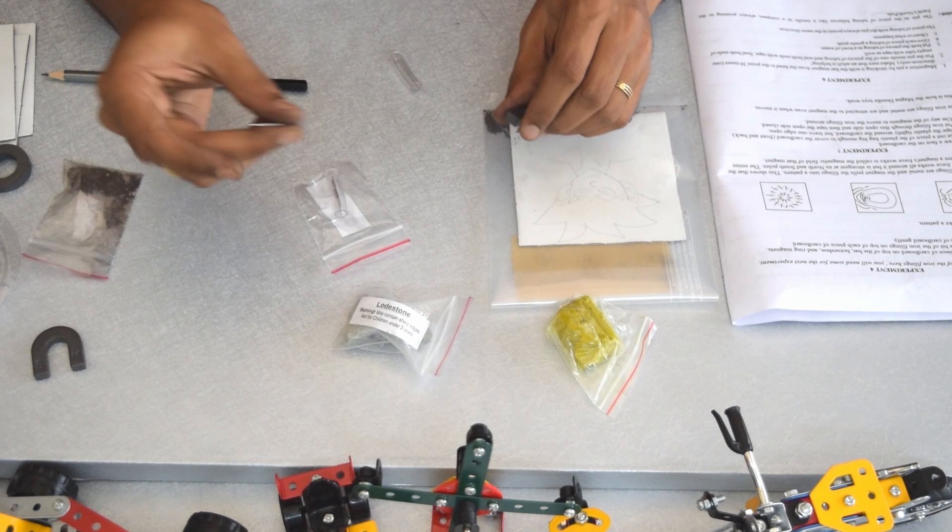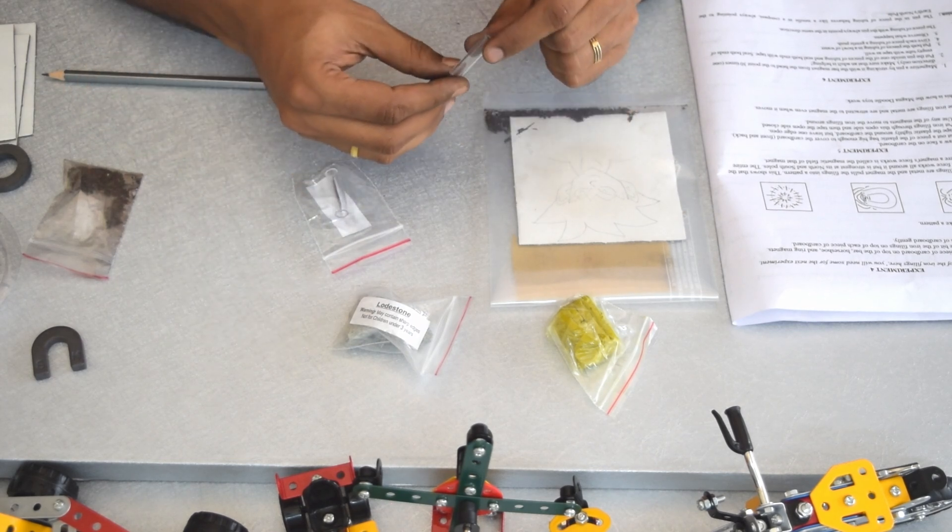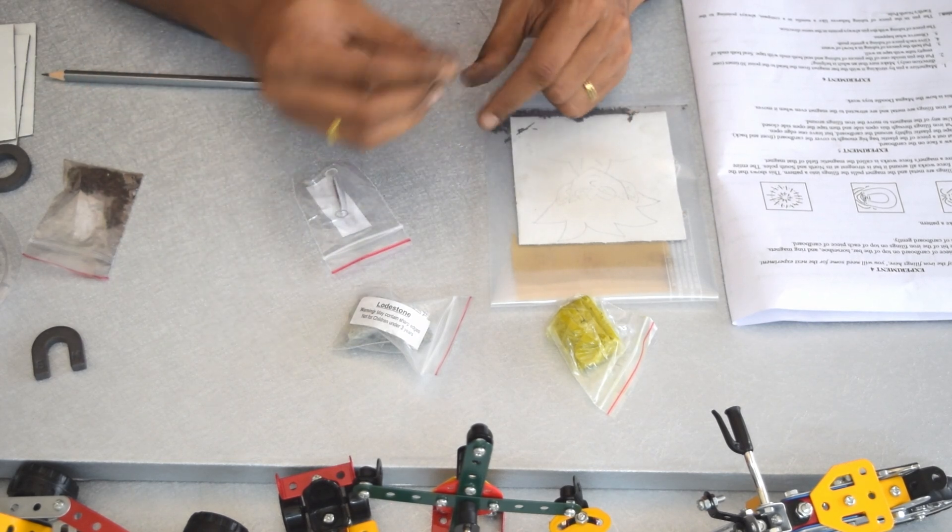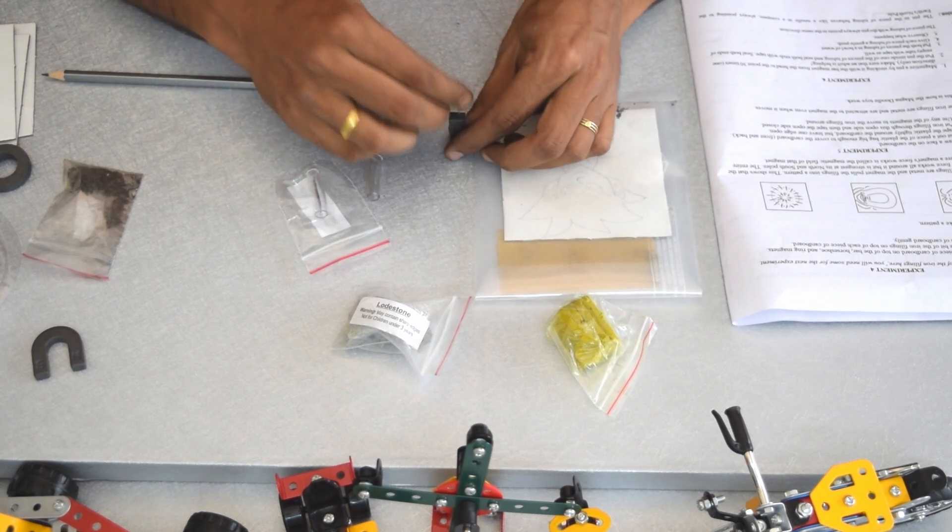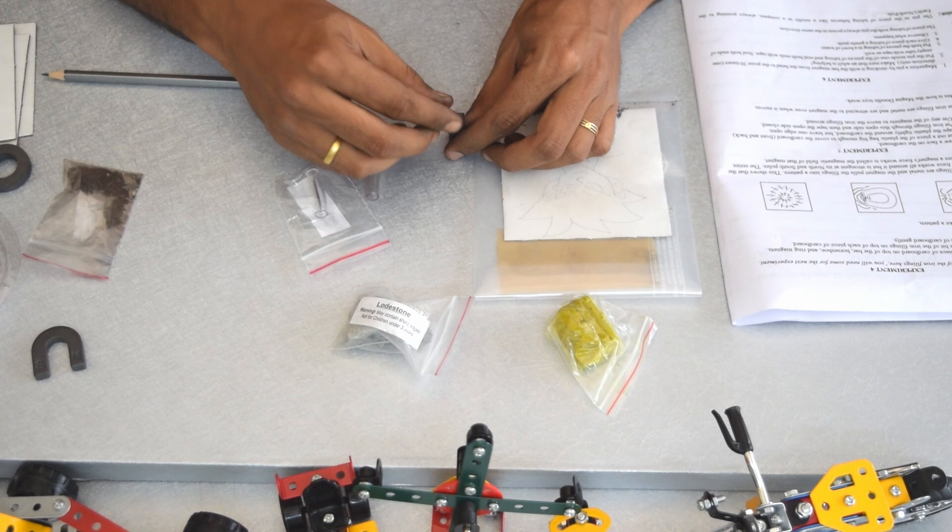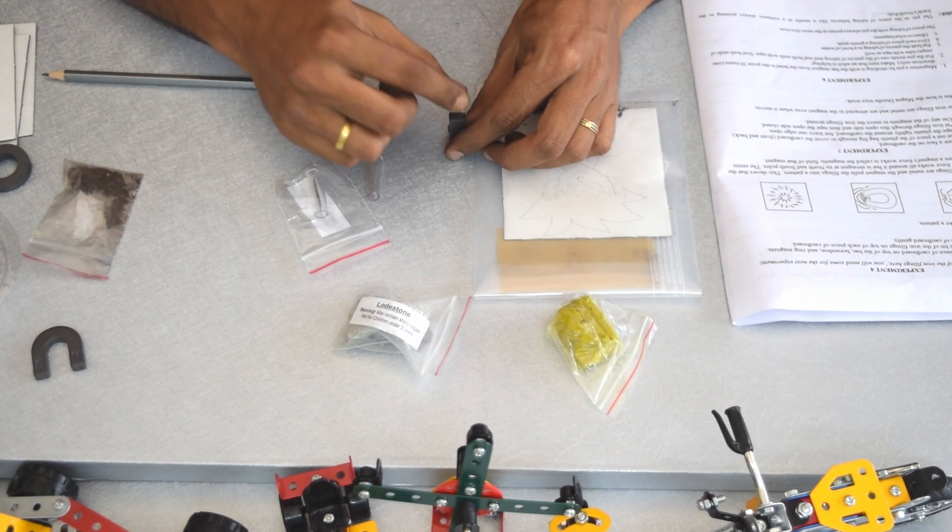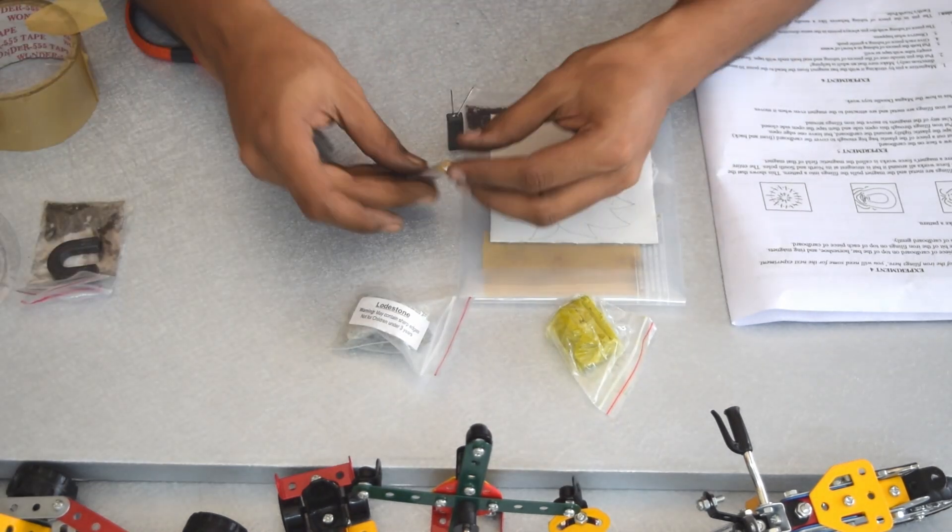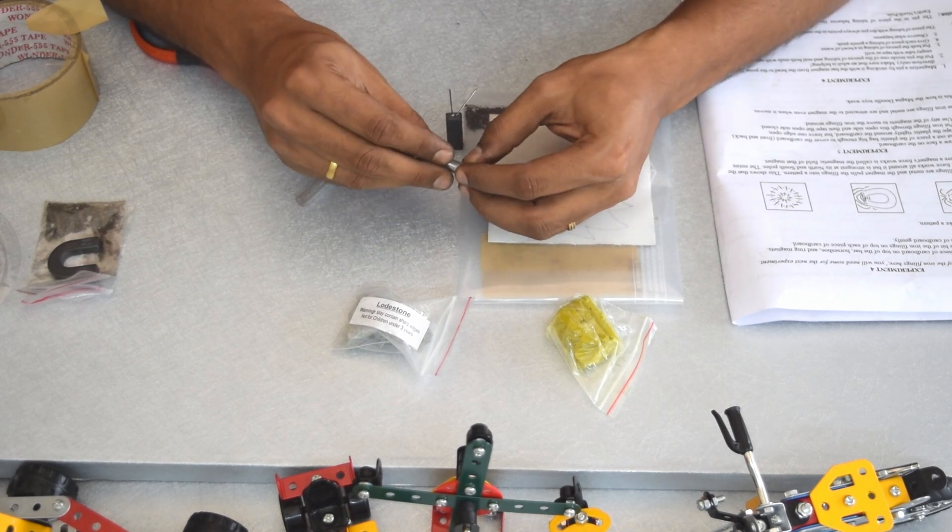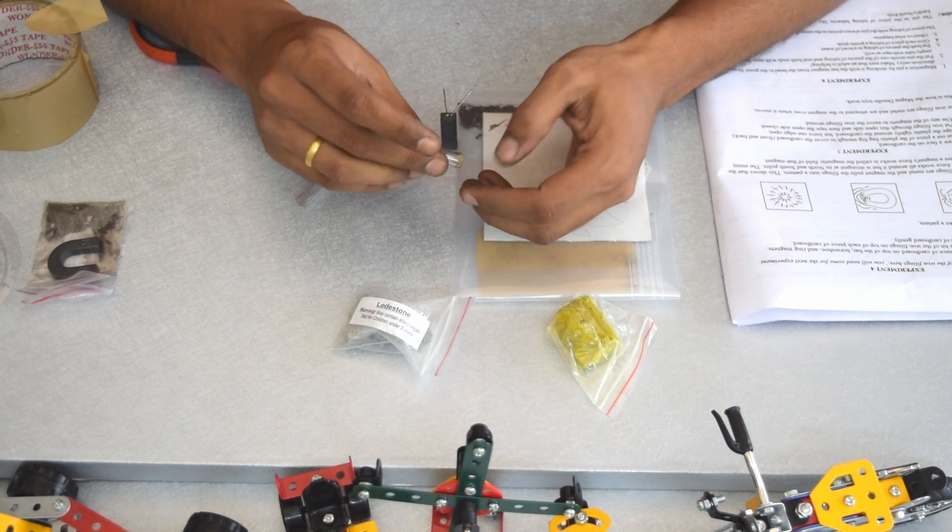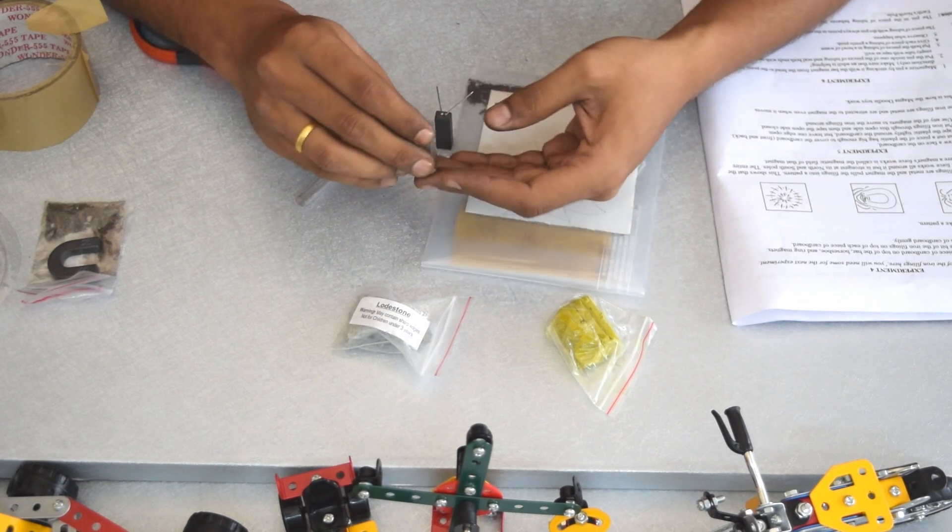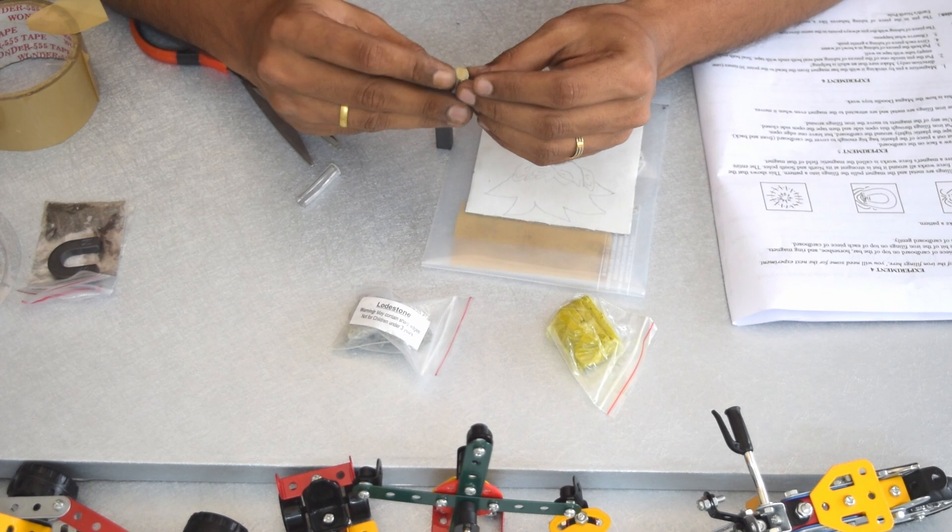We are moving to experiment number six where we use this tubing and the pin as a compass. Let's see if this works. We are stroking the head of the pin to the bar magnet 30 times. I don't know whether this tape will be waterproof. I'm trying to make sure this is waterproof. If the water enters this tube, the experiment won't be successful.